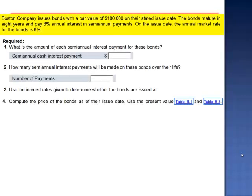Exercise 10. Boston Company issues bonds with a par value of $180,000 on their stated issue date. The bonds mature in 8 years and pay 8% annual interest in semi-annual payments. On the issue date, the annual market rate for the bonds is 6%.